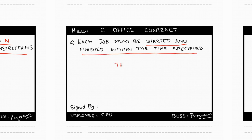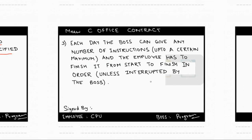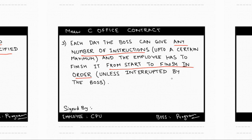There is a time limit associated with each job in the MUC office and the employee must follow this time limit strictly. For example, if there is a job of type 1 and the time limit to finish it is 10 minutes, the employee cannot take 11 minutes — he has to finish it in 10 minutes. The third term reads that each day the boss can give any number of instructions to the employee up to a certain maximum, and the employee has to follow them from start to finish in order, unless otherwise interrupted by the boss.